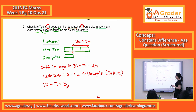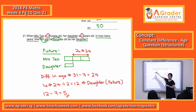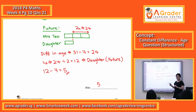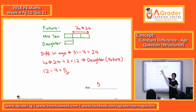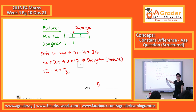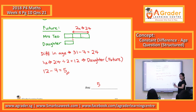But you can always check your answer. Take Mrs. Teo's age 31, plus 5, you get 36. If you divide 36 by three, you get 12, which is the age of the daughter in the future. So this confirms that your answer of five years is correct.